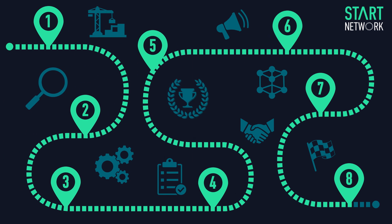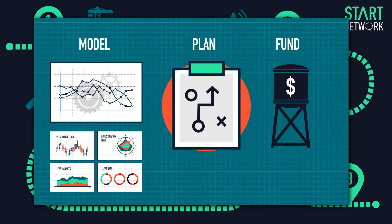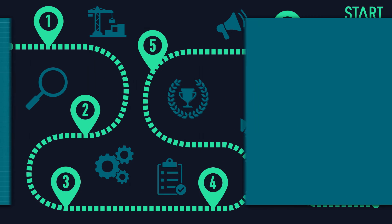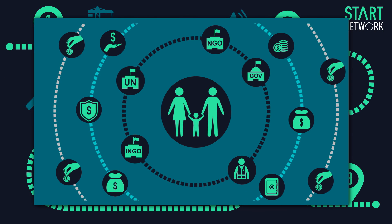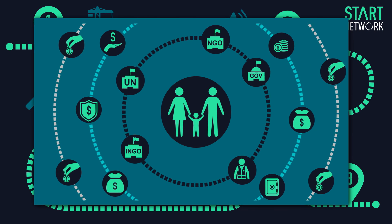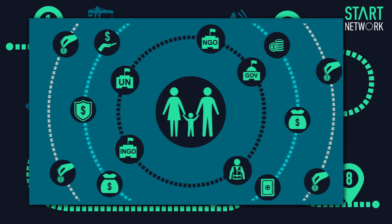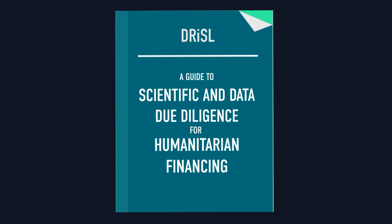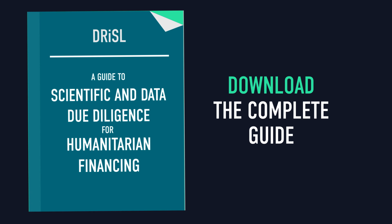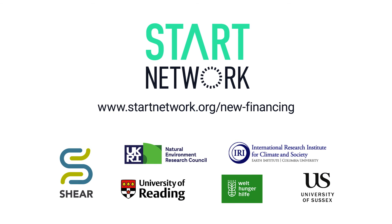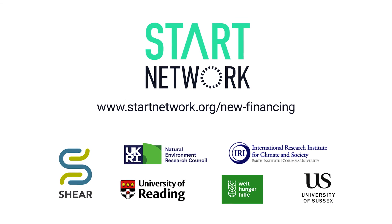Following the guide through these eight checkpoints will ensure the development of a robust and well-designed DRF system with known limitations, and contribute to a more coordinated, predictable and efficient humanitarian system. For more information on disaster risk financing and to download the complete guide from the Drought Risk Finance Science Laboratory, please visit startnetwork.org.